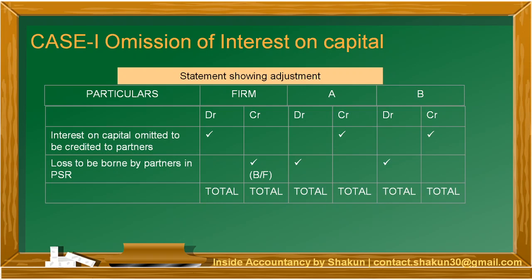Since the balancing figure comes on the credit side, in the case of P&L appropriation that indicates a loss. Therefore, this loss is to be borne by the partners in their profit sharing ratio. Whatever balancing figure you get, you divide it between the partners — in this case A and B. Since it is a loss, it will be shown on the debit side of partners' capital accounts. So this balancing figure has been shown on the DR side of A and B.